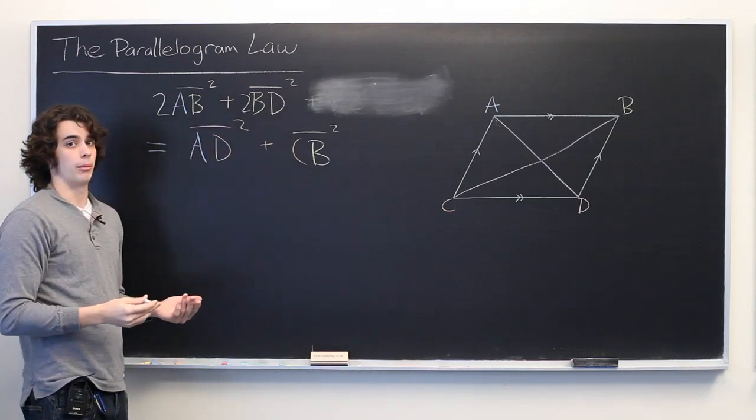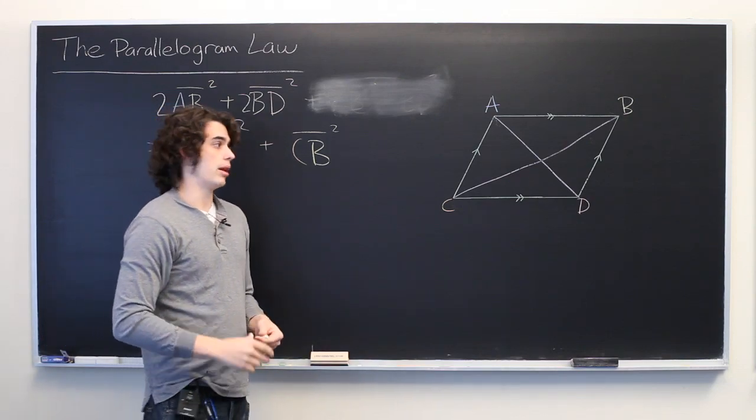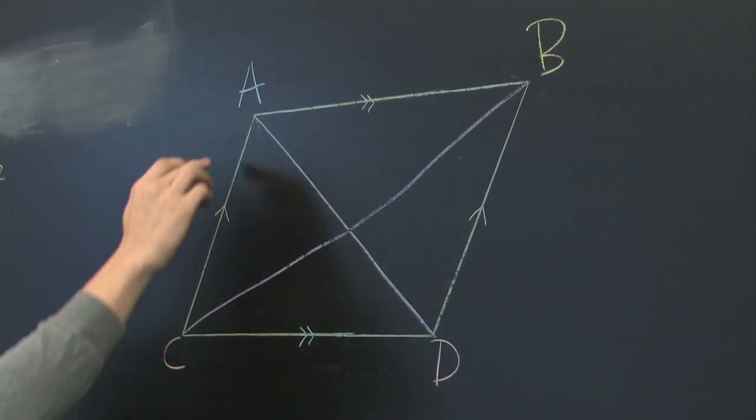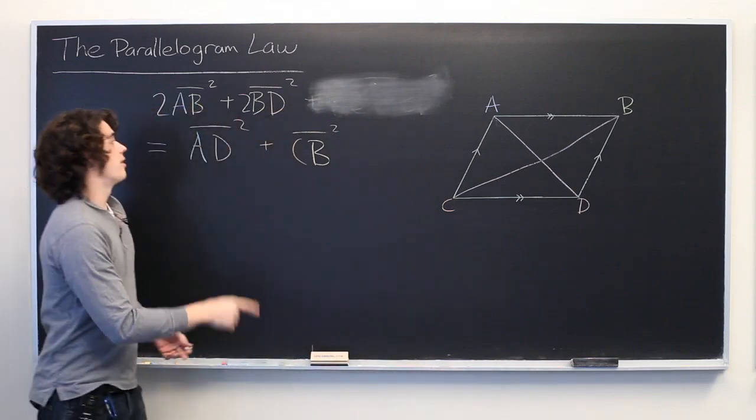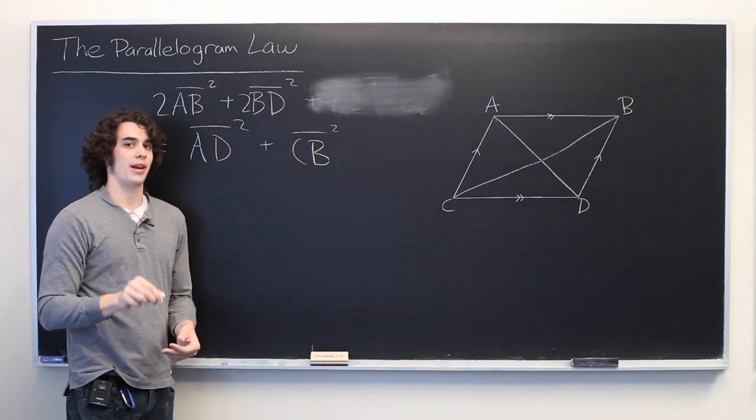One interesting property of the parallelogram law is that if the parallelogram happens to be a rectangle, meaning all of its interior angles are 90 degrees, then this law quickly reduces to the Pythagorean theorem. Try that out for yourself.